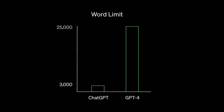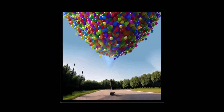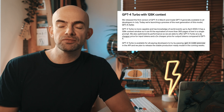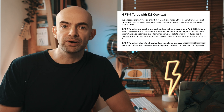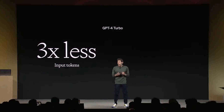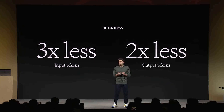OpenAI released the first version of GPT-4 in March and made it generally available to all developers in July this year. GPT-4 Turbo is more capable and has knowledge of world events up to April 2023. It also has a 128K context window, so it can fit the equivalent of more than 300 pages of text into a single prompt. They've also optimised its performance, so OpenAI are able to offer GPT-4 Turbo at three times cheaper for input tokens and two times cheaper for output tokens compared to normal GPT-4.